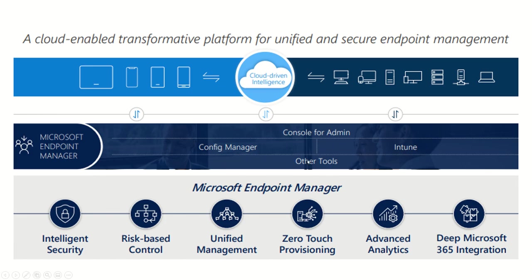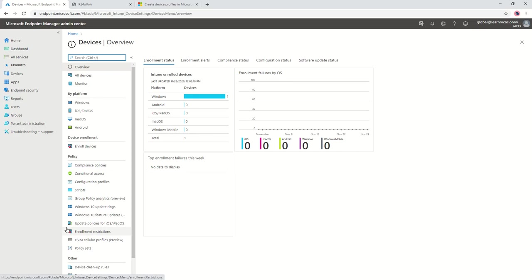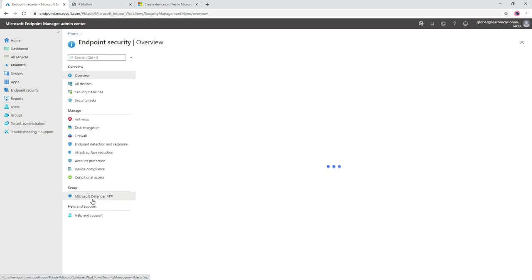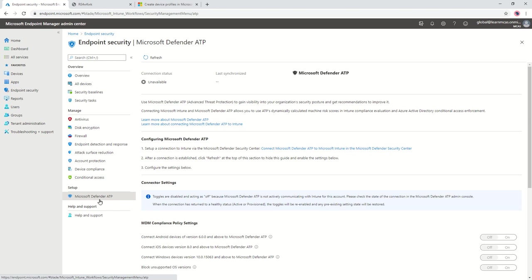The 'Other Tools' section represents integrations defined for Microsoft Endpoint Manager portal with other services to make it more resilient, reliable, and scalable. The first is Intelligent Security — this is the same example discussed, where a risky device is flagged as non-compliant in Intune and Azure AD blocks all access. In the console at endpoint.microsoft.com, under Endpoint Security, you can directly integrate Microsoft Defender for Endpoints with your Endpoint Manager console.